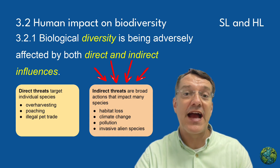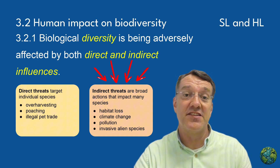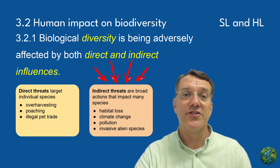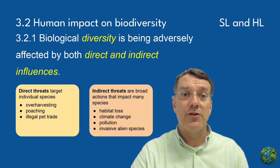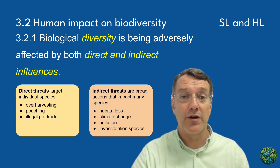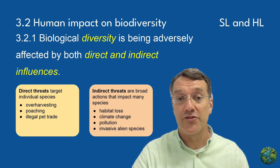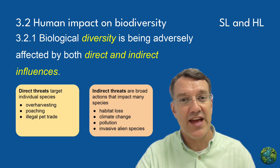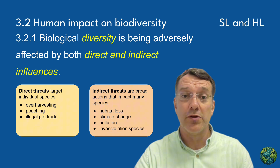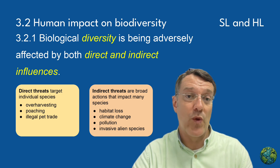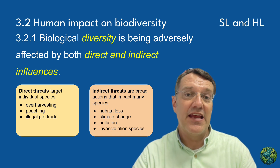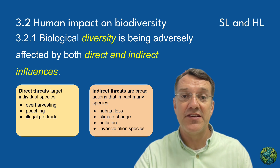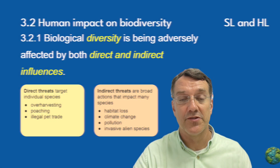Indirect threats, on the other hand, impact many species simultaneously through broader environmental changes. These include habitat loss, where forests are cleared for agriculture or development, climate change caused by greenhouse gas emissions, various forms of pollution like plastic waste and chemical runoff, and the introduction of invasive alien species that disrupt native ecosystems.